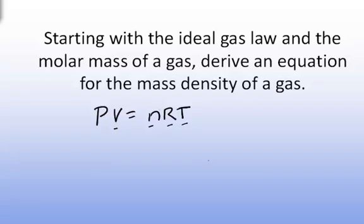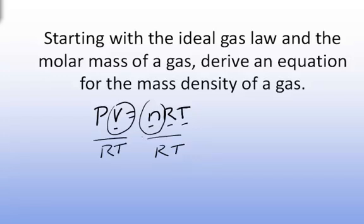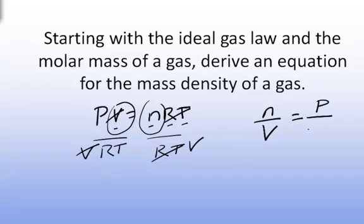Thinking about the number density first, let's rearrange the ideal gas law to represent it. The number density is the number of moles per volume of space. I can rearrange by dividing both sides of the equation by RT and by V. V cancels here, RT cancels here, and I am left with the expression N over V, which is the number density of a gas, equal to P over RT.